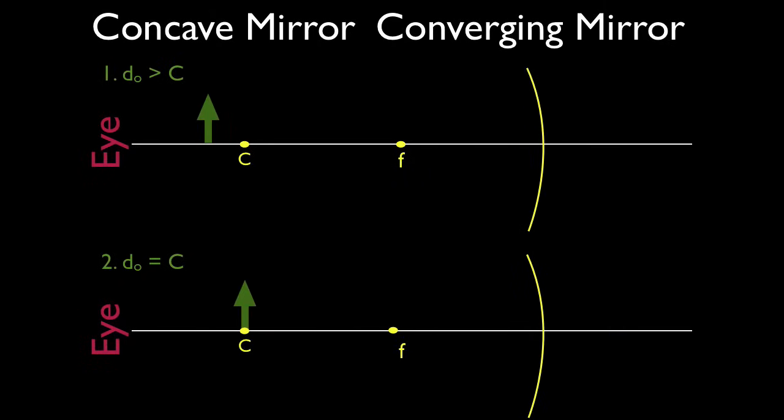Here's our first problem. The object and your eye are on the same side as the mirror — think about how you use a mirror to look at your face. Whether it's a concave mirror, a convex lens, a concave lens, or a convex mirror, the ray diagrams are drawn basically the same way. You don't have to memorize a bunch of different methods — just memorize the two or three rules and apply them to all four optical devices.